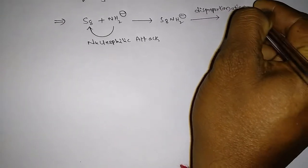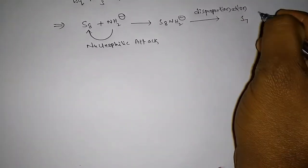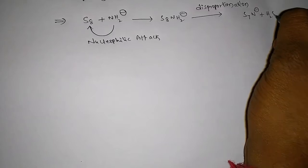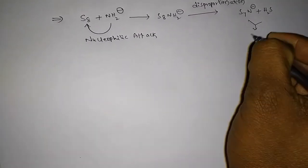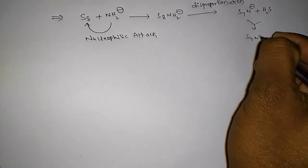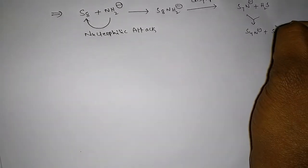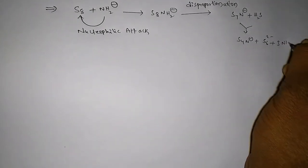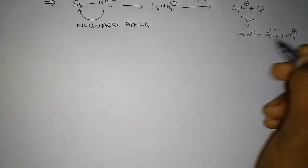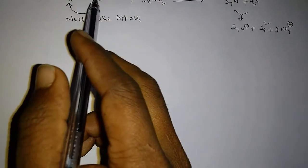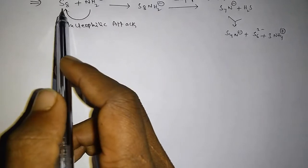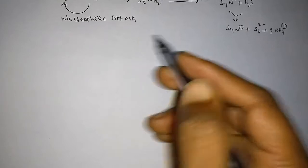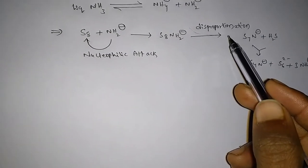On disproportionation, we can get S7N- plus hydrogen sulfide. And this on further forms S4N- plus polysulfide S6(2-) plus 3 moles of NH4+. So these are the final products. When liquid ammonia reacts with S8, that reaction is simply disproportionation reaction.